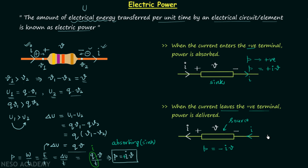When power is delivered, the element acts as a source. A helpful shortcut: whenever current enters any terminal, the sign of that terminal is the sign of the power. Current entering the positive terminal gives positive power; current entering the negative terminal gives negative power.